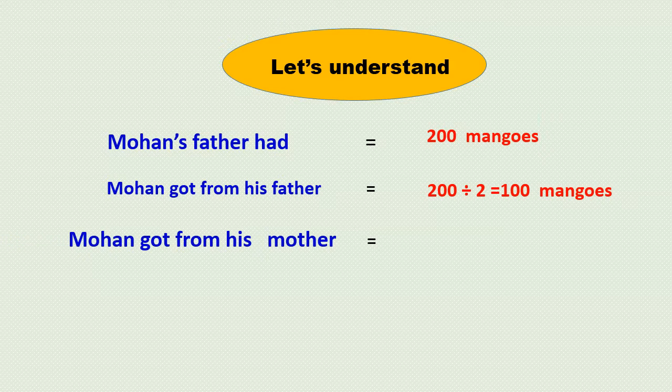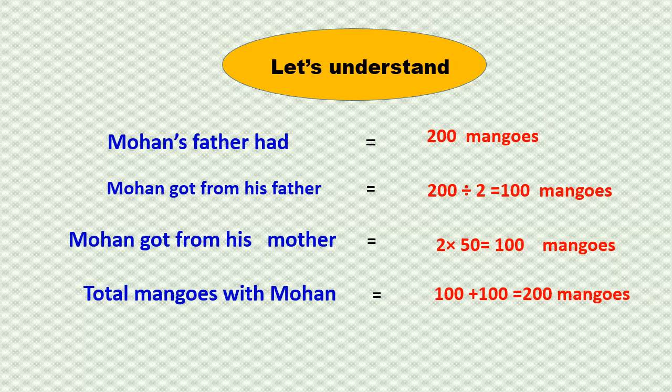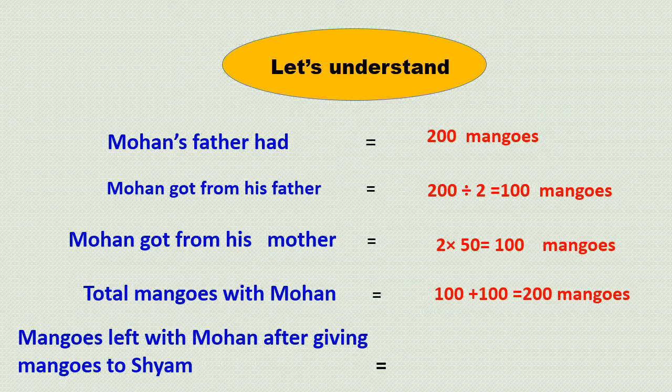Mohan got from his mother 2 times 50 equals 100 mangoes. Total mangoes with Mohan: 100 plus 100 equals 200 mangoes. Mangoes left with Mohan after giving mangoes to Shyam equals 200 minus 30 equals 170 mangoes. This means Mohan now has 170 mangoes.